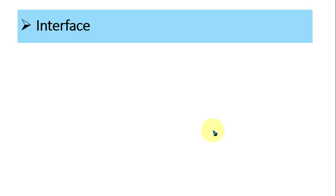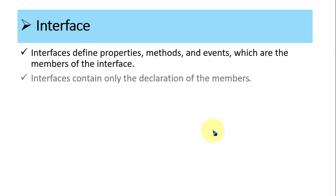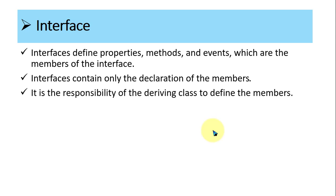Basically, an interface is a collection of the properties, methods and events which are the members of the interface. An interface contains only the declaration of the members. That means we can only declare the methods, properties and events inside the interfaces, and those properties, methods and events have to be implemented inside the class. It is the responsibility of the deriving class to define the members of an interface.